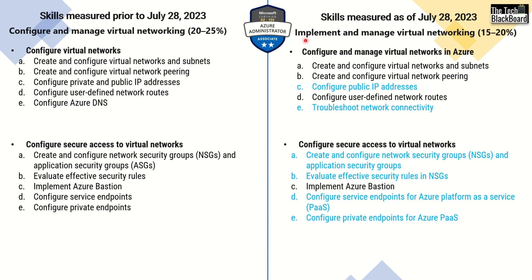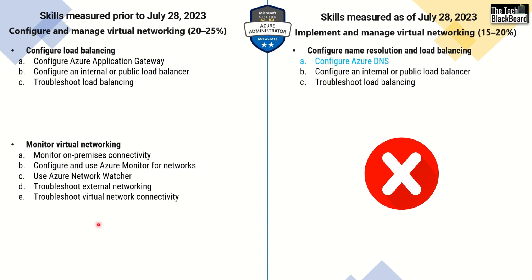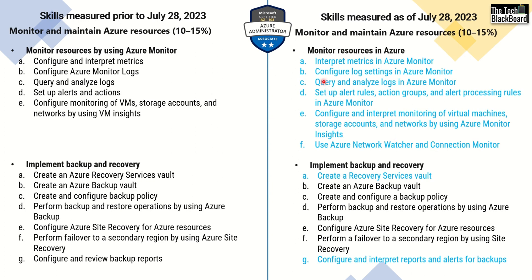Now let's jump to Implement and Manage Virtual Networking. Here you can see a decrease in percentage, and the changes include 'Configure Public IP Addresses,' 'Troubleshoot Network Connectivity,' and 'Create and Configure Network Security Groups and Application Security Groups.' Earlier the acronym ASG was used explicitly but now it has been removed, though NSGs and ASGs remain very important for the exam. We also have changes in 'Evaluate Effective Security Rules in NSG,' 'Configure Service Endpoints,' and 'Configure Private Endpoints for Azure PaaS Services.' In the second subsection, changes come in 'Configure Azure DNS,' and one entire subsection — Monitor Virtual Networking — is now removed. The last skills measure, Monitor and Maintain Azure Resources at 10 to 15%, has changes in both 'Monitor Resources in Azure' and 'Implement Backup and Recovery.'